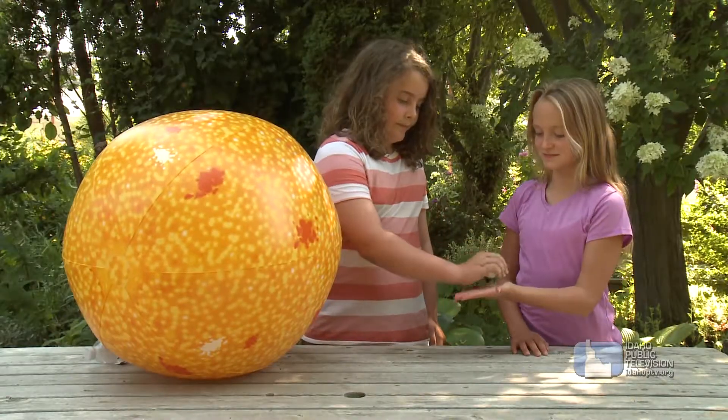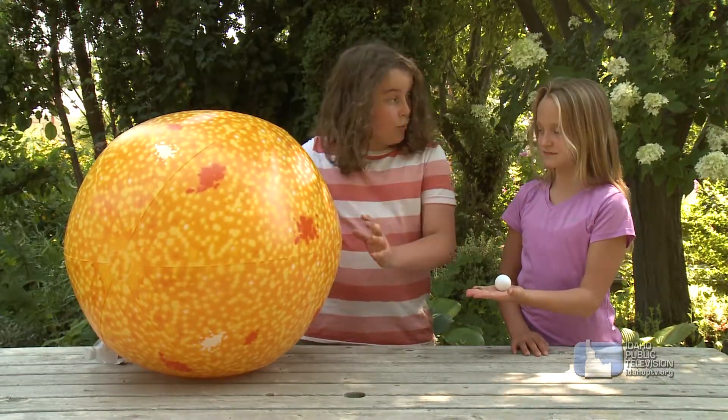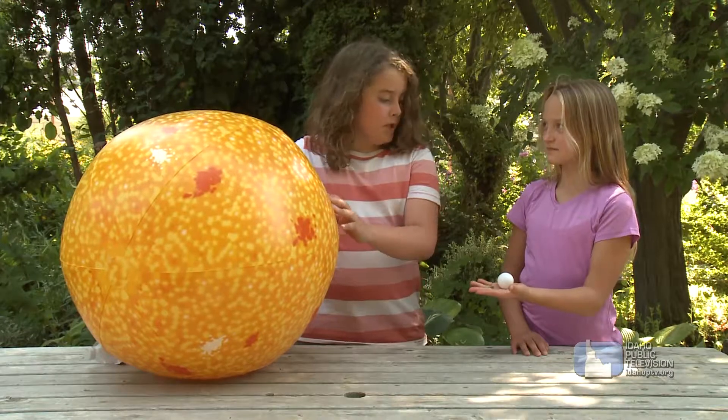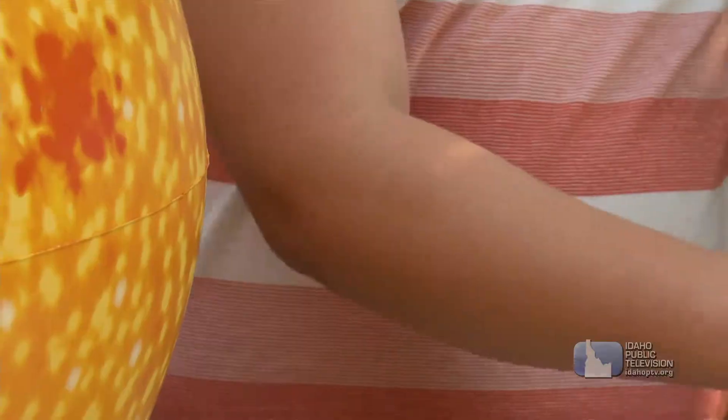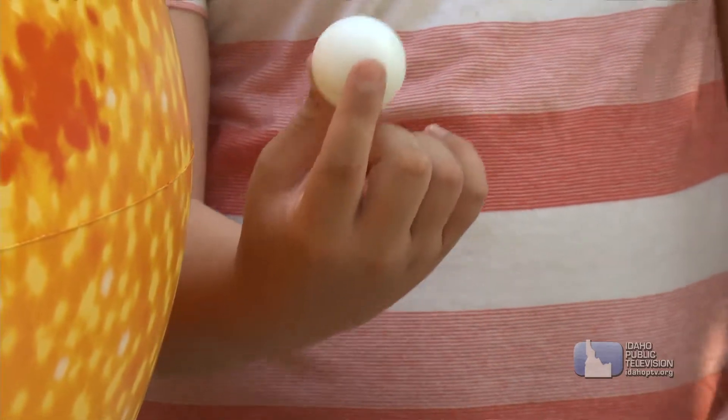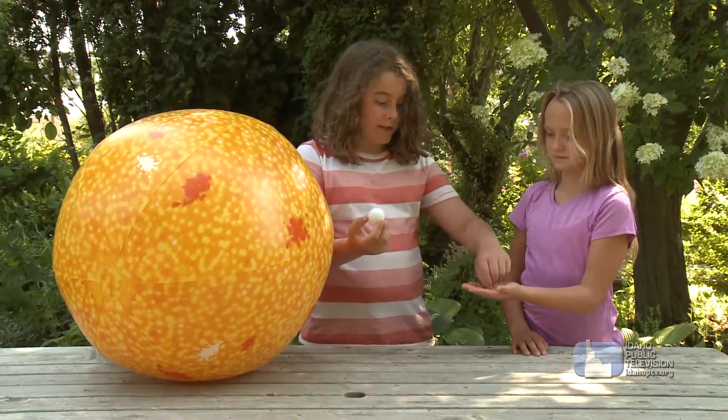Here, hold these. The sun is really big. If the sun were this beach ball, Jupiter, the biggest planet in our solar system, would be the size of this ping pong ball. And Earth would be the size of this pea.